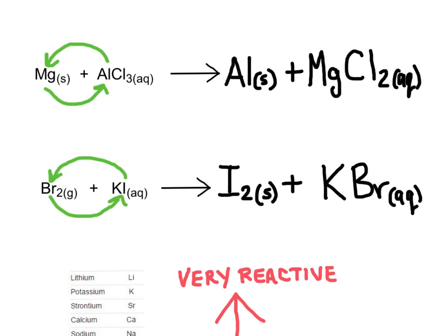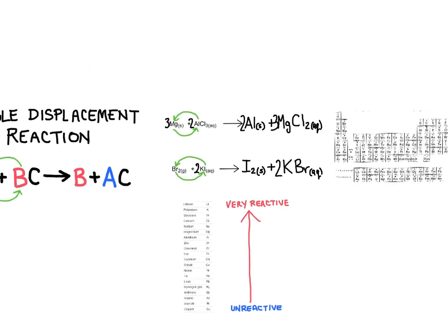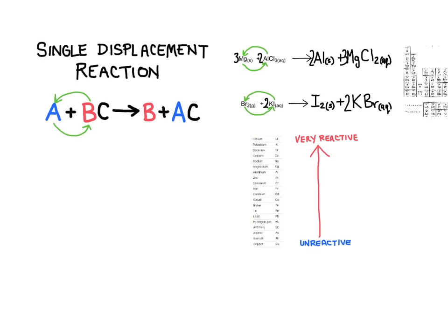Now I have both chemical reactions completed with the products written. The last step is to make sure they're balanced. Starting with the bottom reaction, I'll put a 2 in front of bromine and a 2 in front of KBr so everything balances. For the top reaction, I'll need a 3 in front of magnesium, a 2 in front of AlCl₃, a 2 in front of aluminum, and a 3 in front of MgCl₂. You can click the link to review the video on balancing chemical equations. And that covers predicting the products of single displacement reactions.